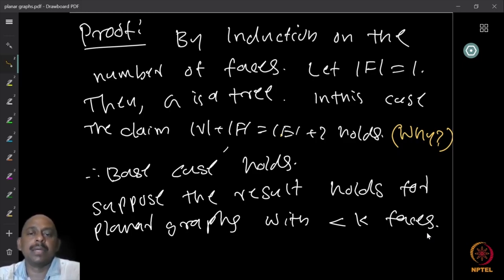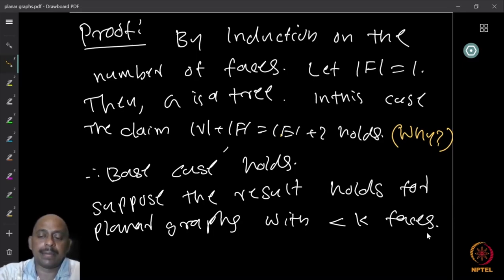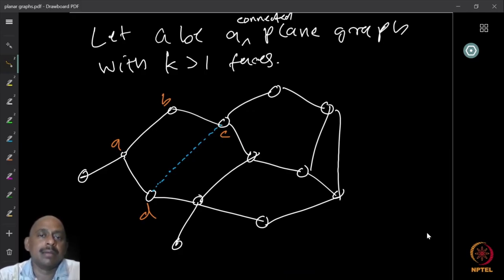Now assume the result holds for all connected plane graphs where the number of faces is less than k, for some k greater than one. We assume the result holds for connected plane graphs with fewer than k faces.